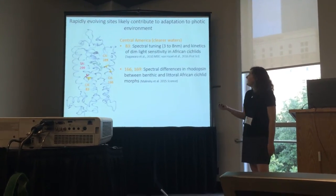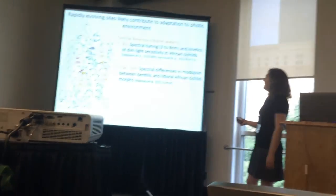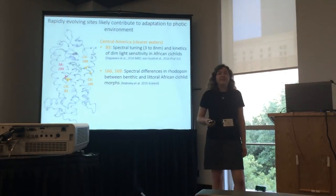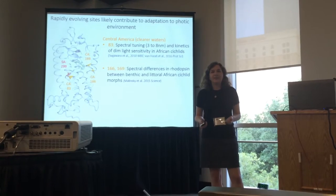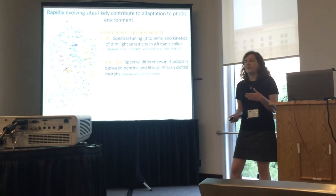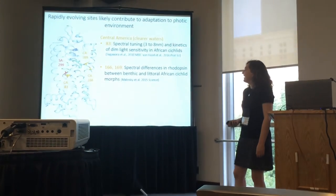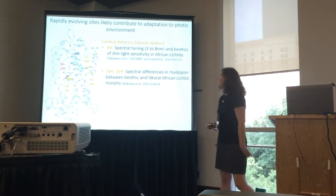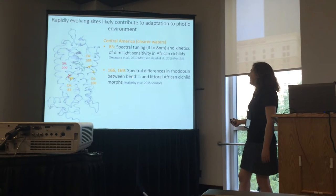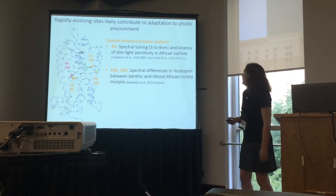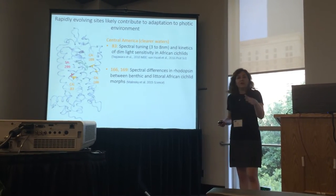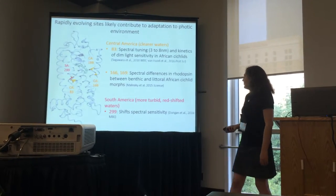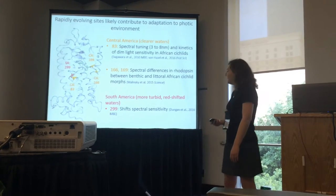Looking at these in detail from the literature, site 83 is actually a spectral tuning mutation in African cichlids that also affects the kinetics of dim light sensitivity — and this is under positive selection in our Central American dataset. Sites 166 and 169 mediate spectral differences in rhodopsin between benthic and littoral African cichlid morphs, and site 84 selection is known to shift spectral sensitivity as well.